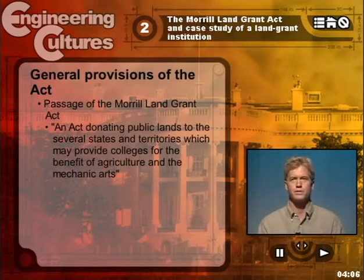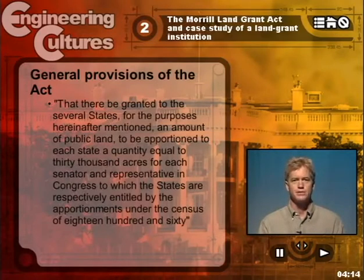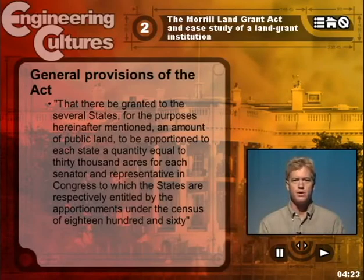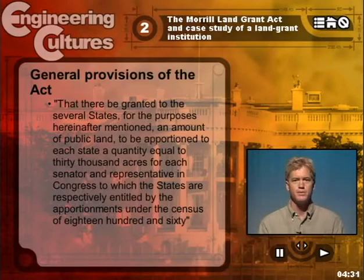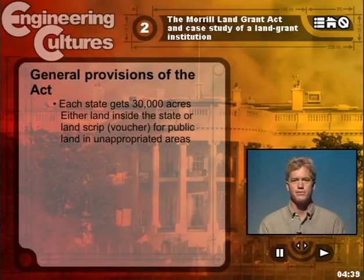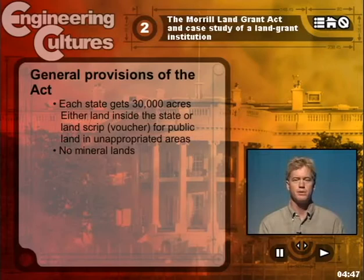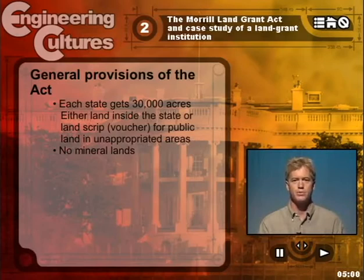Here's the vehicle through which the schools would get established. Quoting from the act itself: there be granted to the several states, for the purposes hereinafter mentioned, an amount of public land to be apportioned to each state — a quantity equal to 30,000 acres for each senator and representative in Congress to which the states are respectively entitled by the apportionment under the census of 1860. In other words, each state would get access to 30,000 acres of federal land for each member of Congress. These lands were to be selected from public lands inside the state that were available for sale. If such lands were not available, then the state was issued a land script — basically a voucher it could cash in for lands in unappropriated areas out west.